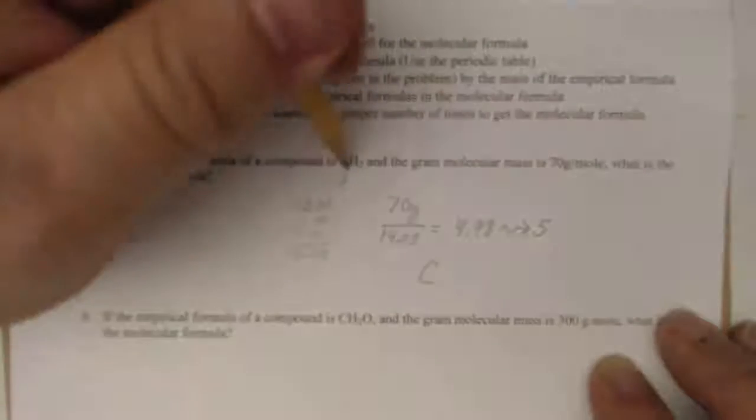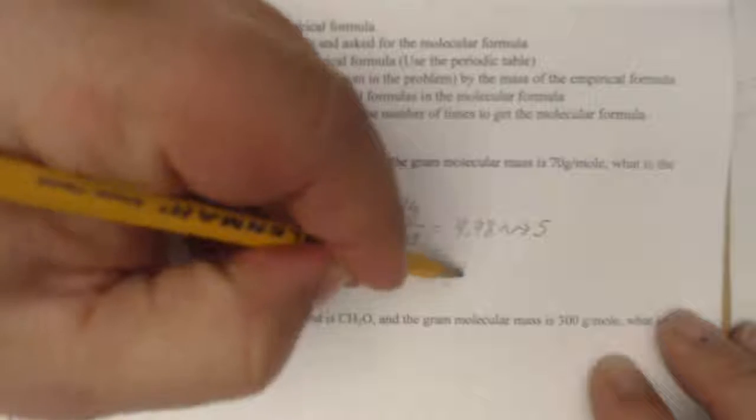So, what we can do is we can take the C times 5, and the H's, since there are two of them, 5 times 2, there's 10, and there's our answer.